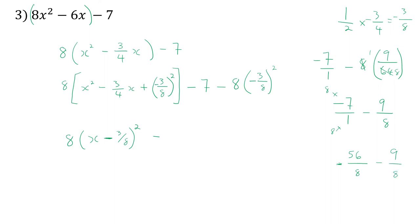Wait — that gives us negative sixty-five-eighths as the constant. So the final answer is eight times (x minus three-eighths) all squared minus sixty-five-eighths. If you want to express that as a mixed number: that's negative eight and one-eighth, since sixty-four plus one is sixty-five. So our complete answer is eight(x − 3/8)² − 65/8.